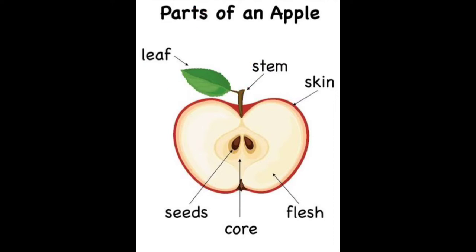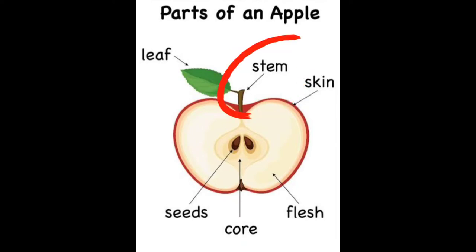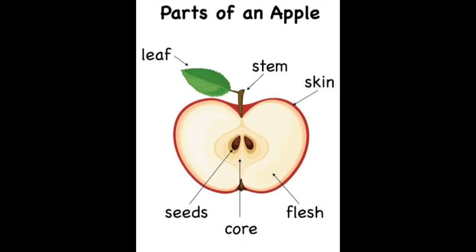Moving on to the next part, which is the stem. The stem is a part of apple fruit that always connects the apple to the branch of the apple tree. Bagian tangkai dari buah apple adalah bagian yang menghubungkan buah apple-nya dengan pohon buah apple.